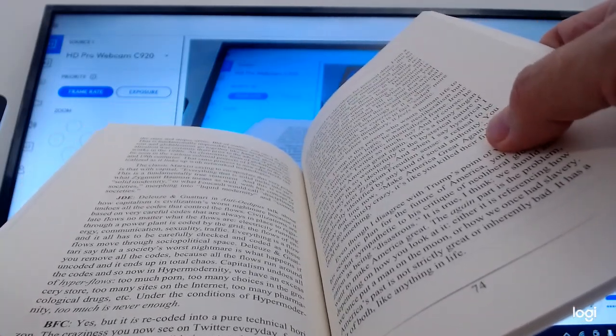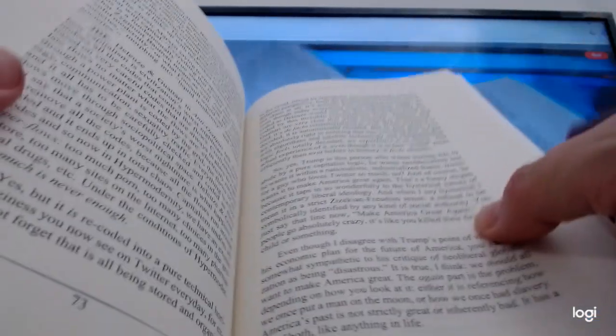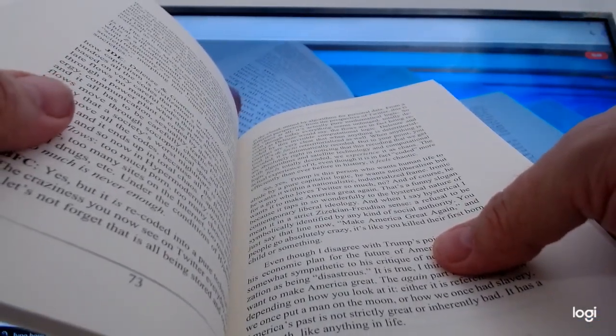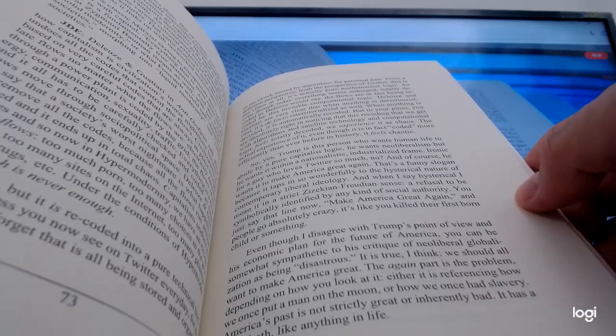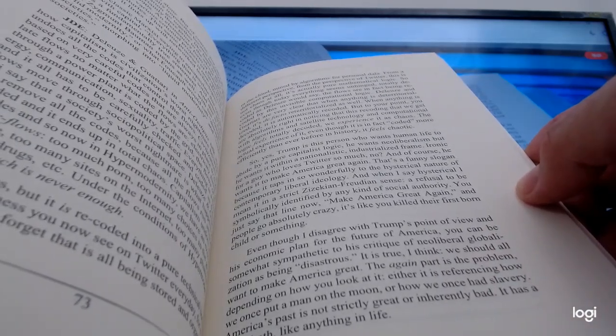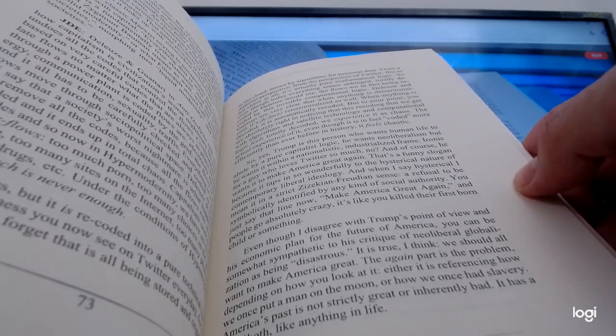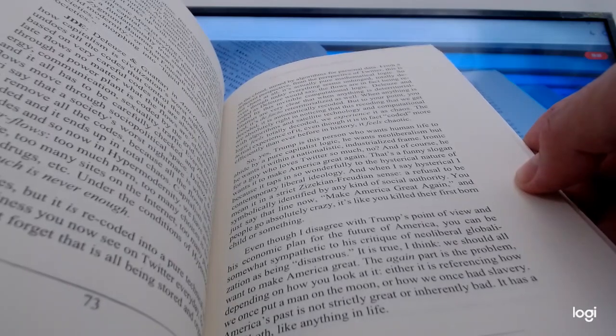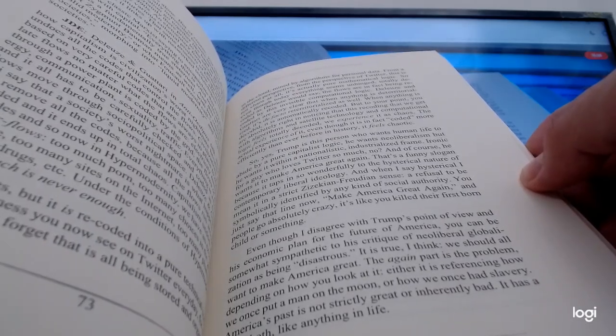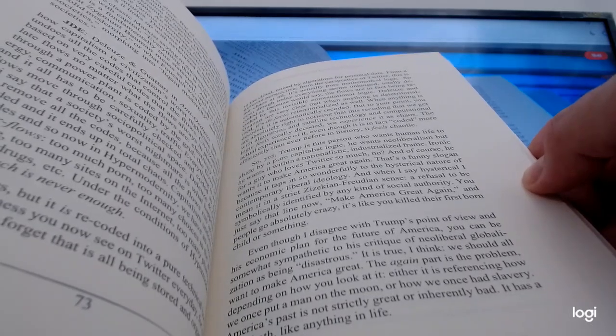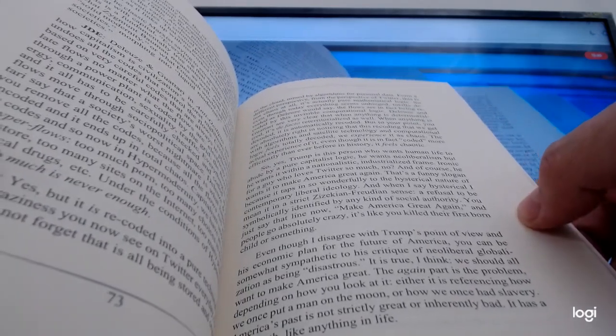So now in hypermodernity we have an excess of hyperflows. Too much porn, too many choices in the grocery store, too many sites on the internet, too many pharmacological drugs. Under the conditions of hypermodernity too much is never enough. Culkin: Yes, but it is recoded into a pure technical horizon. The craziness you now see on Twitter every day, let's not forget that is all being stored and organized in the cloud, mined by algorithms for personal data. From a different perspective, from the perspective of Twitter, this is not chaos at all. It's actually pure mathematical logic. So even though today everything seems unhinged, totally decoded as Deleuze would say, the flows are in fact being recoded by this invisible computational logic.